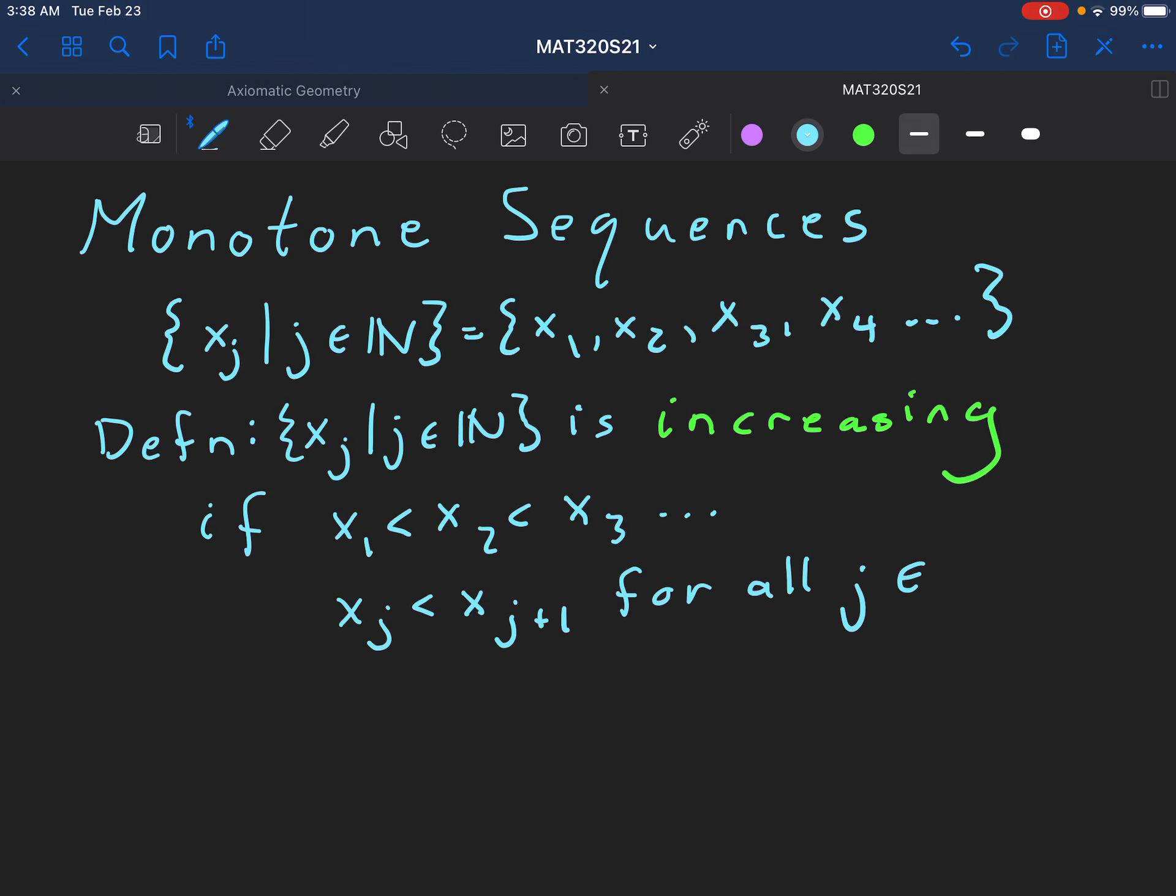For all j's in the naturals. Okay so that's an increasing sequence, the terms are going up to the right. So if I draw the picture: x_1, x_2 and so on going off to the right.